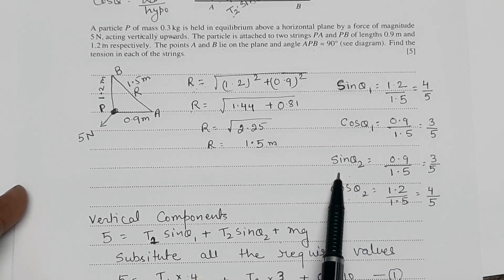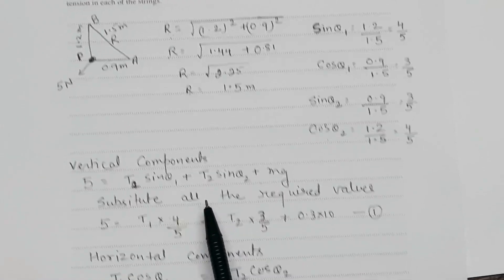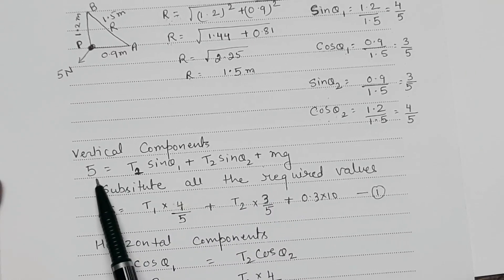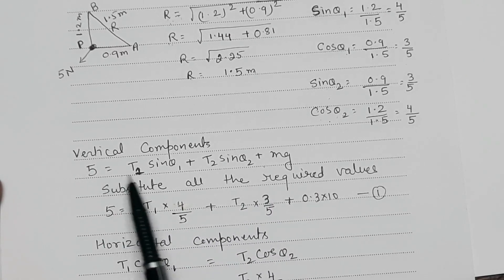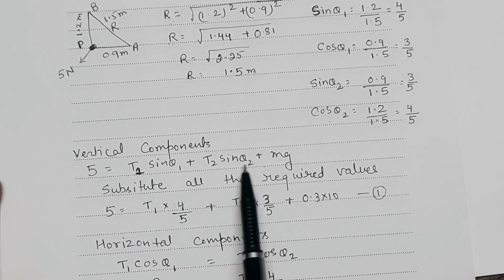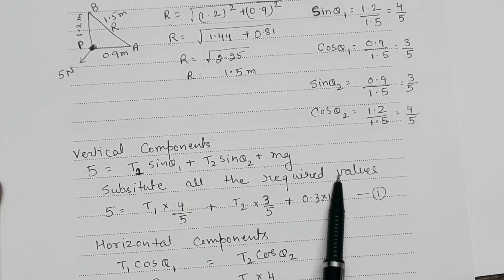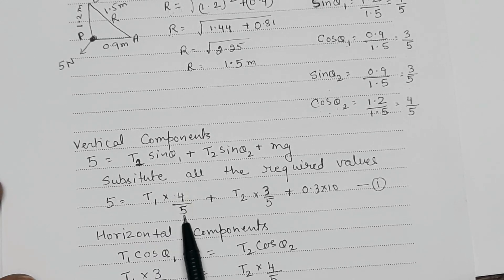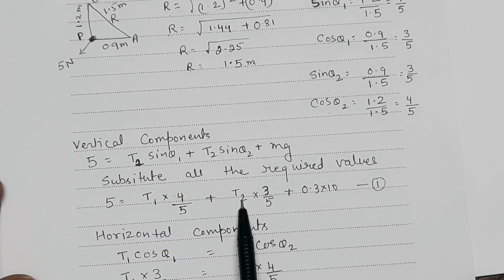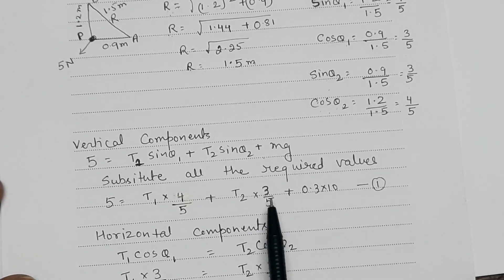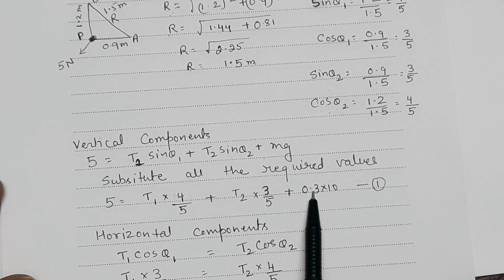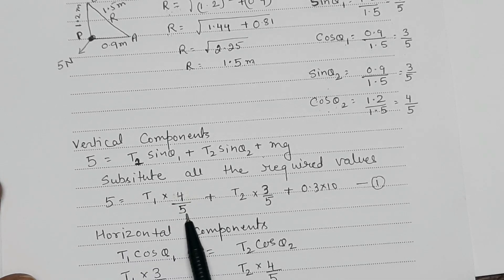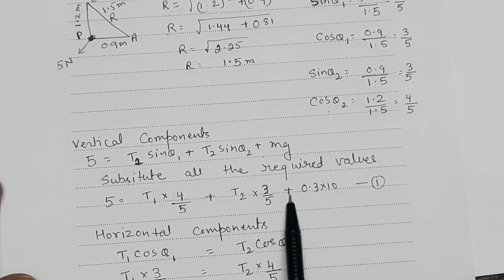After finding the values of all the angles our next task is to see the vertical components and horizontal components. So vertical component, the 5 is equal to T1 sin theta 1 plus T2 sin theta 2 plus Mg and substitute all the required value that is all the angles value. We will get that 5 will be equal to T1 into 4 by 5, this is the value for sin theta 1, plus T2 into 3 by 5, value of sin theta 2, plus 0.3 that was the mass of that particle into the value of g that is 10. So we will get that 5 is equal to 4T1 by 5 plus 3T2 by 5 plus 3.